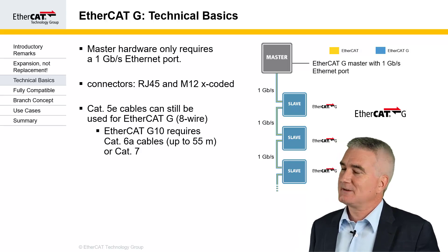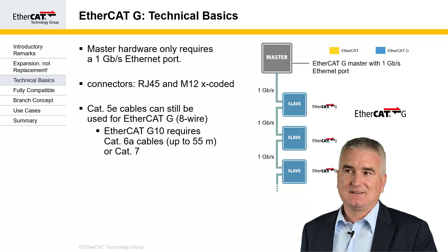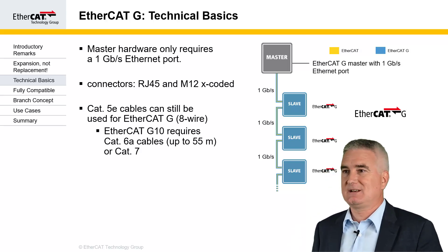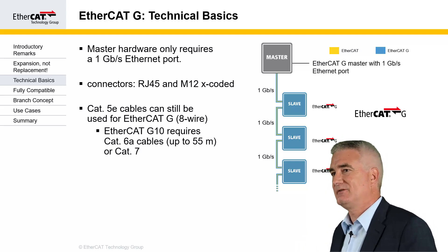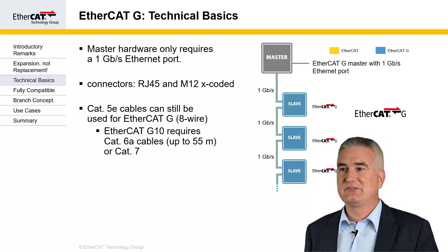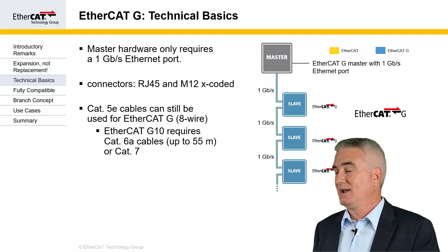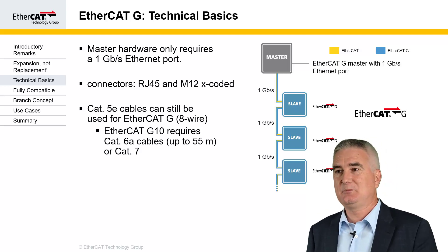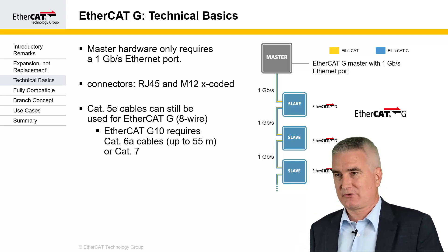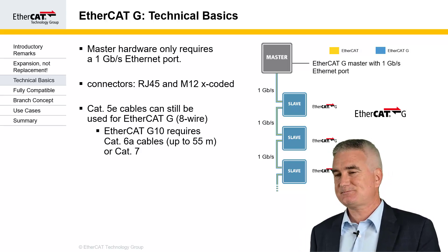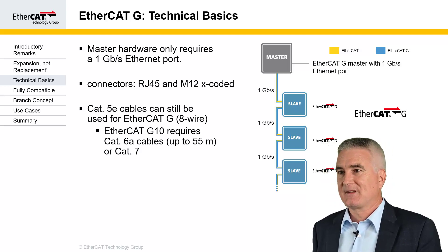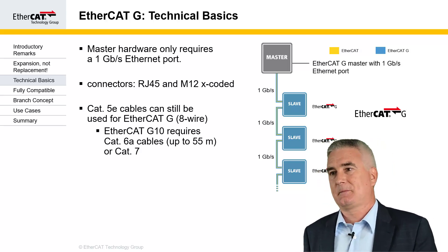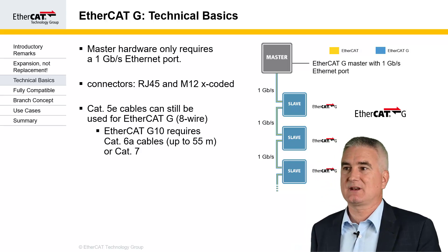Looking at the technical basics further: in standard mode, EtherCAT-G does not need any software change in the master — all you need is a gigabit port. On the physical layer, there are changes. The slave devices as well as the cabling need to support 1000Base-T. This means 8 conductors in the cable instead of 4, and 8-pin connectors. RJ45 is 8-pin already, so that doesn't change. But in the case of IP67, the M12 connector needs to be changed to the X-coded version to provide the 8 pins needed. For cabling, CAT5 cables can be used for EtherCAT-G in 8-wire configuration. For G10, CAT6A or CAT7 is required, depending on the length of the network.